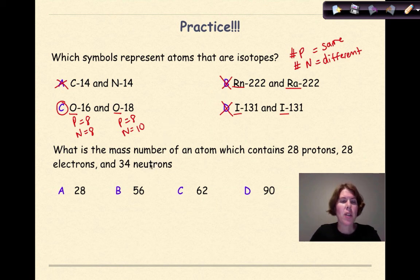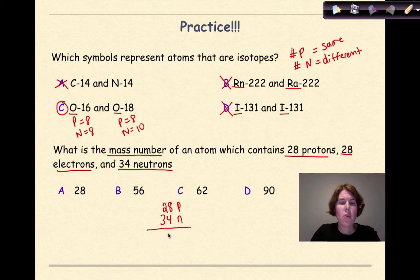Let's look at this example. What is the mass number, atomic mass, of an atom which contains 28 protons, 28 electrons, and 34 neutrons? We have three subatomic particles given to us. The key thing to remember is that the mass is composed of protons and neutrons. So we do 28 plus 34. So 28 protons, 34 neutrons, and we add those together, we get 62.